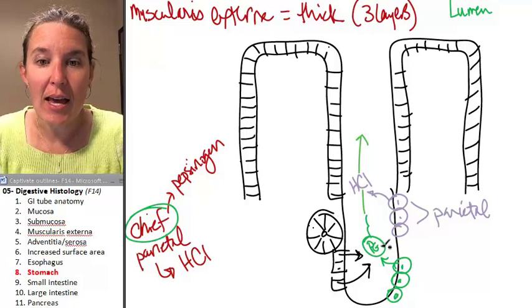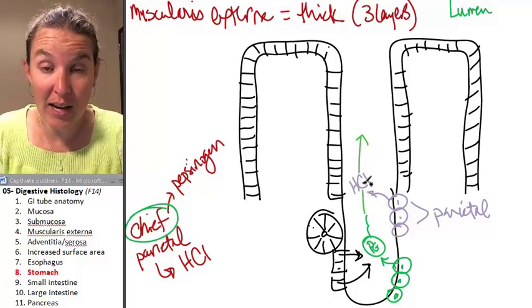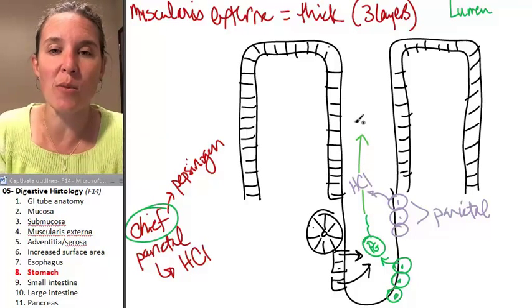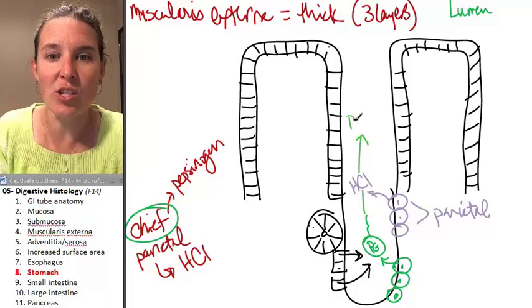When pepsinogen comes in contact with hydrochloric acid, when pepsinogen is in a very acidic environment, it actually turns into pepsin.